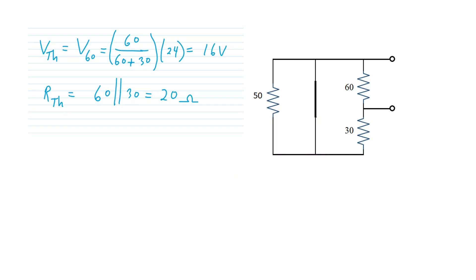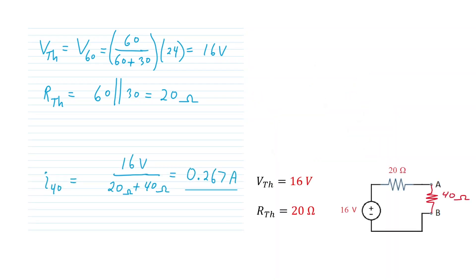For the Thevenin ohms, we short circuit the constant voltage source, which also shorts out the 50 ohms, leaving us effectively with the 30 ohms in parallel with the 60. It doesn't look parallel, but the 60 and 30 are connected at two junctions. So 60 in parallel with 30 is 20 ohms — that's our Thevenin ohms. Bringing in the Thevenin circuit and applying the 40 ohm output at points A and B, the current in the 40 ohms is 16 volts divided by the series combination of 20 and 40 ohms — which is 60 ohms — giving 0.267 amps.